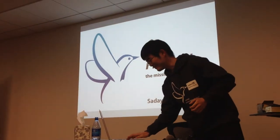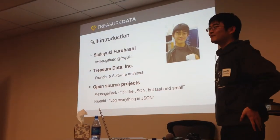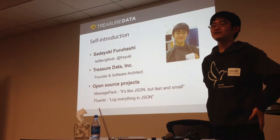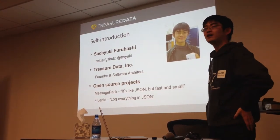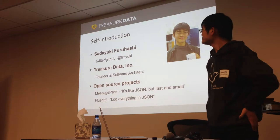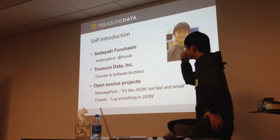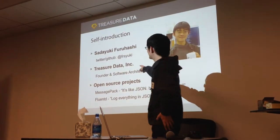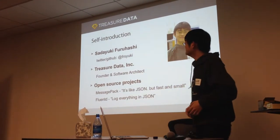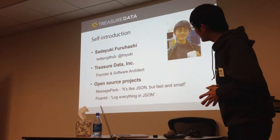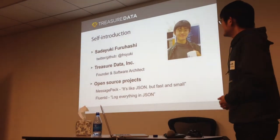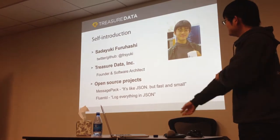Let me introduce myself first. My name is Sadae Fuhashi. I came here from Japan one and a half years ago, and my Twitter ID is frs.j. I founded TrojaDate Inc., located in Mountain View.